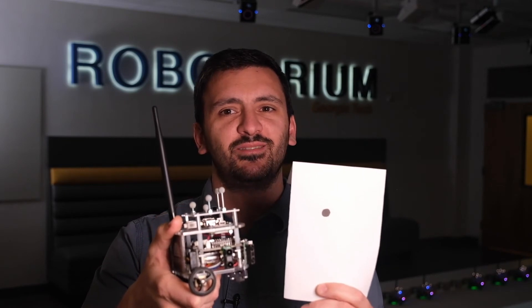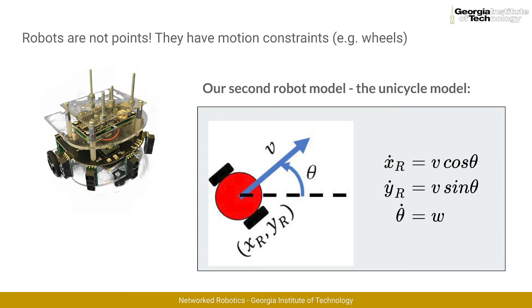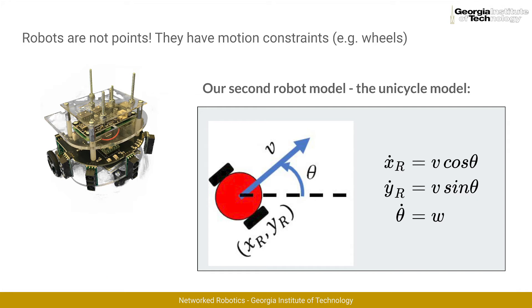The results of the experiment look great. However, there is an important consideration: we derived the consensus equation assuming robots were points whose velocity could be moved in any direction. However, this is a point, and this is one of our robots at the Roboterium — can you see the difference? Wheels. One of the most relevant features of mobile robots like those used here at the Roboterium is the presence of wheels.